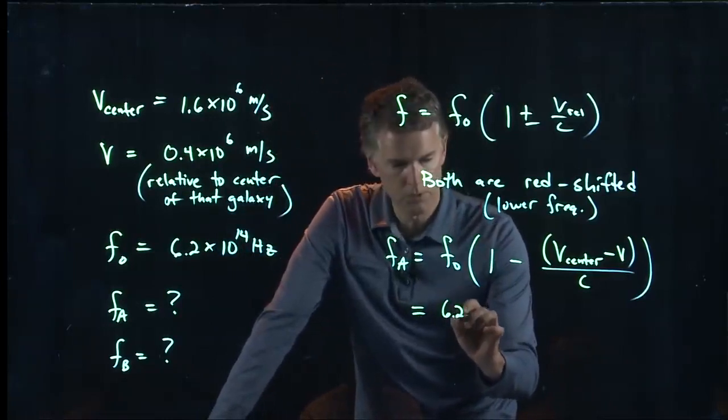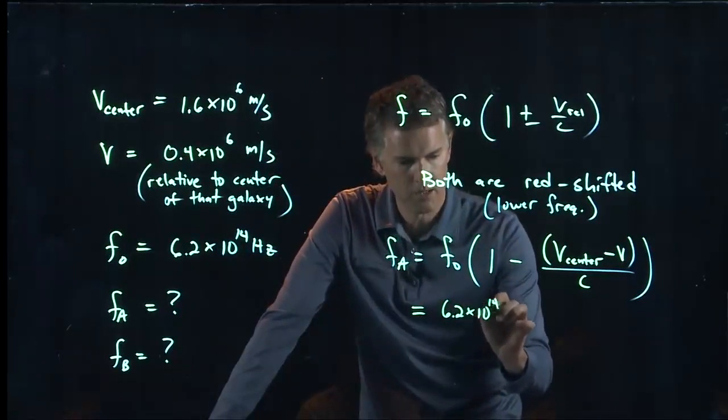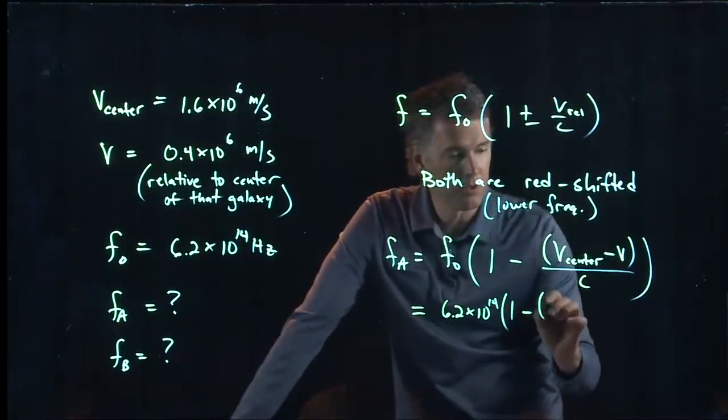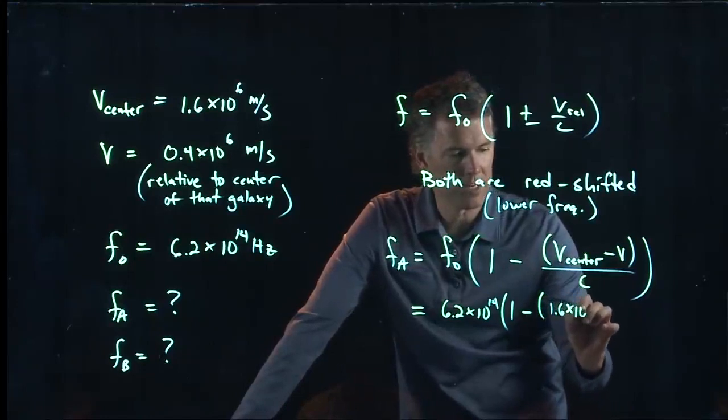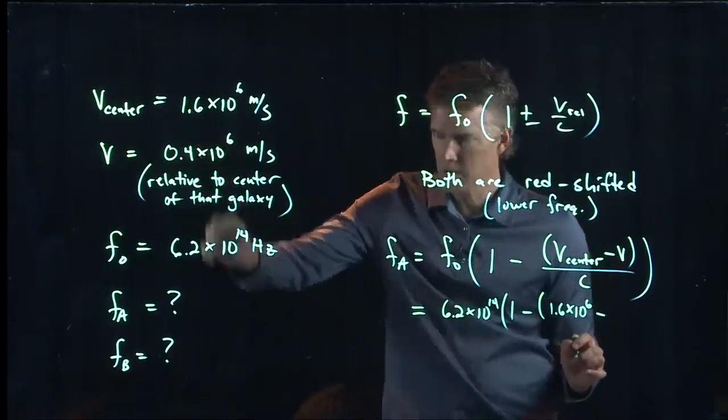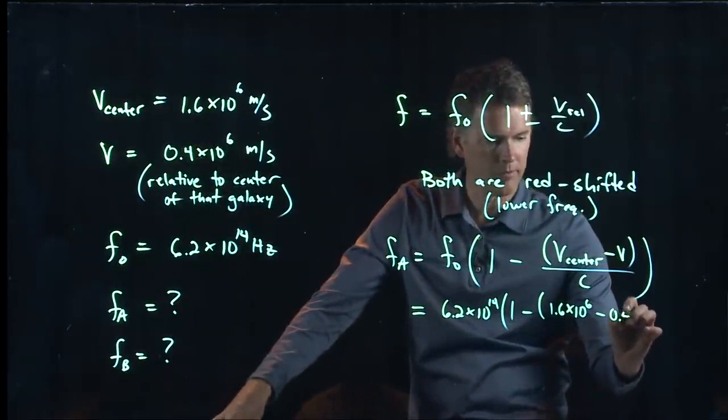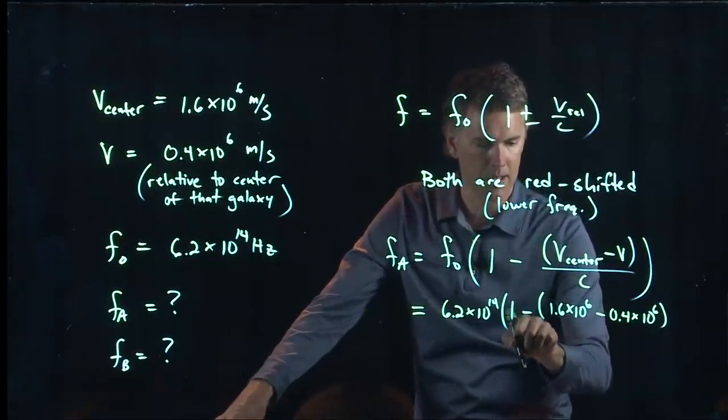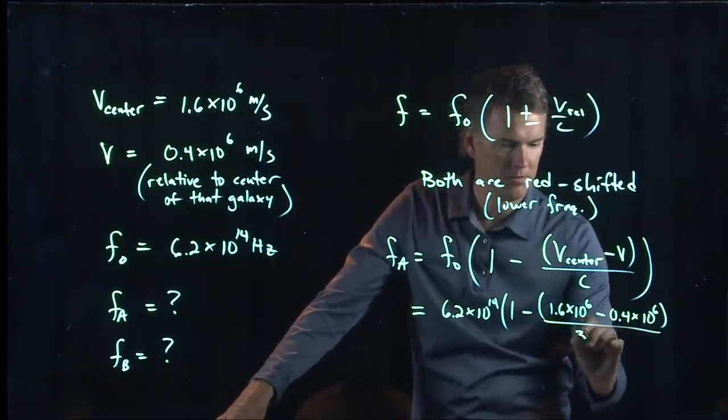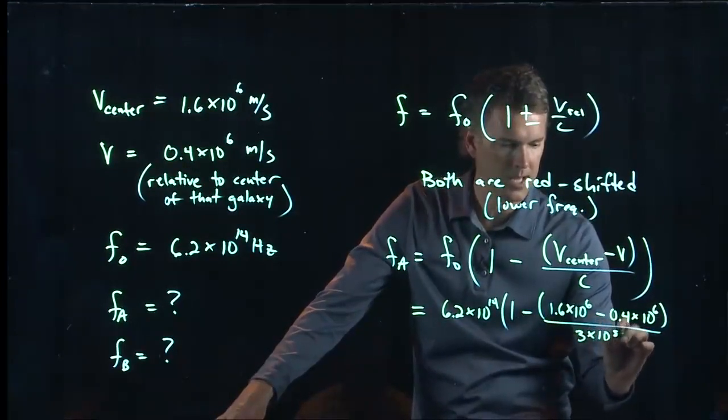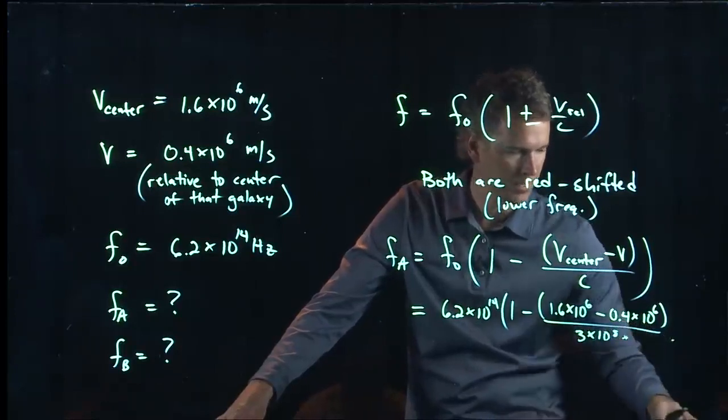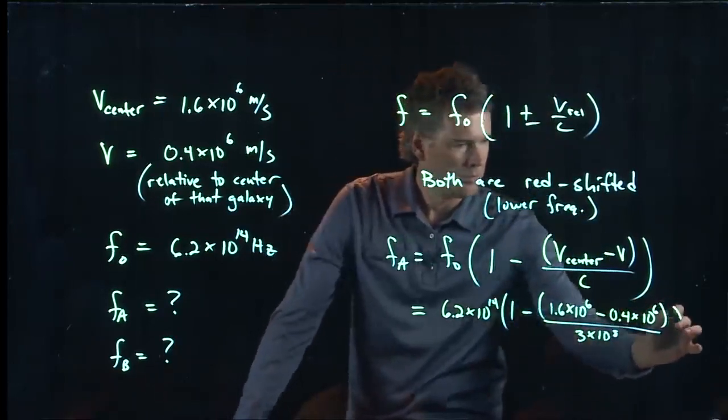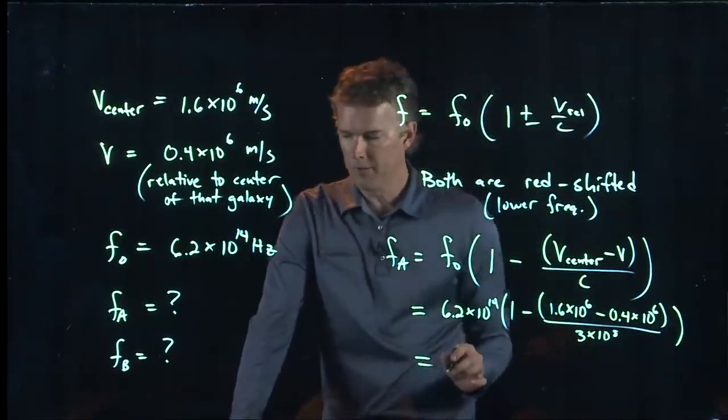And let's do that. We've got 6.2 times 10 to the 14. Out in front we have a 1 minus this thing, which is 1.6 times 10 to the 6. Minus the rotational speed, which is 0.4 times 10 to the 6. And then that last bit is all over C, which we know is 3 times 10 to the 8 meters per second. Okay, we'll just keep SI units on everything. We don't have to write the units. Close the parentheses.